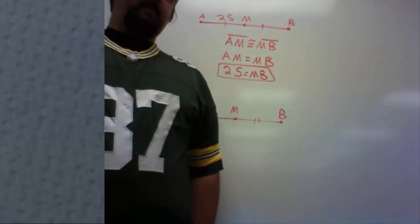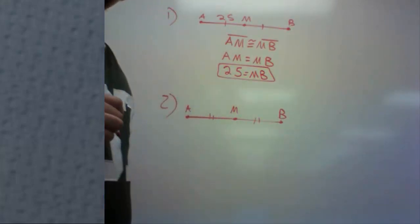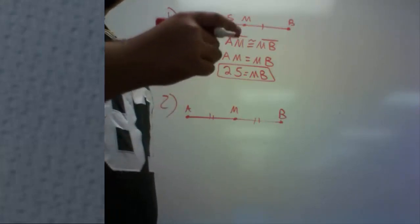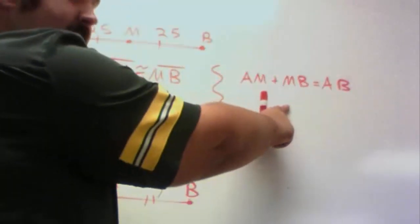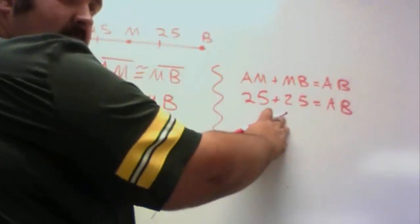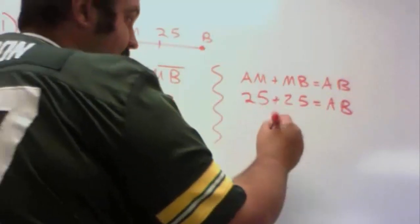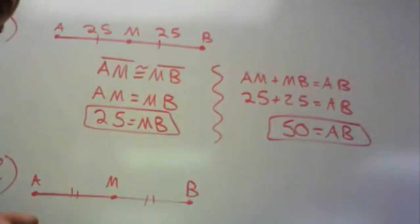Now, to find the length of segment AB, I'm just going to use the segment addition postulate. Length of segment AM plus length of segment BM equals length of segment AB. Written as such. Plug in what I know, and then simplify. Those are my two answers for example 1.